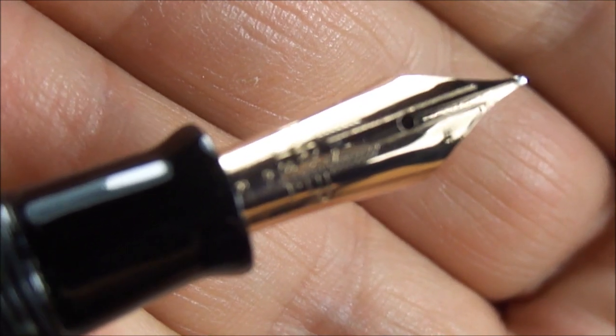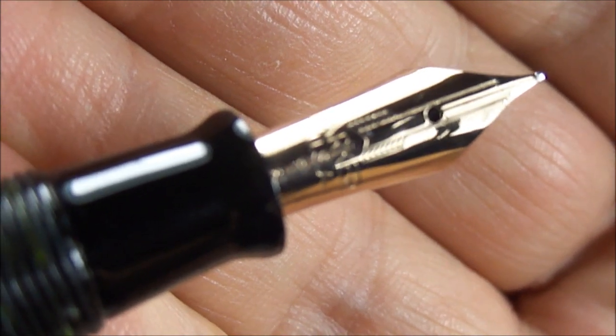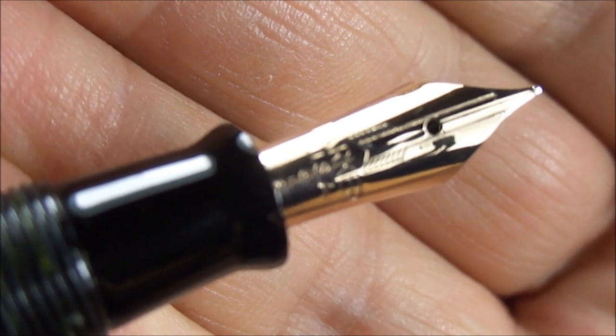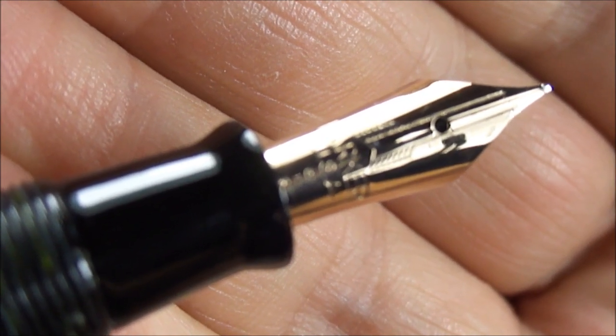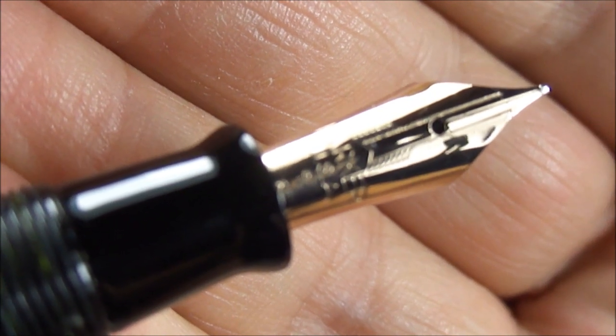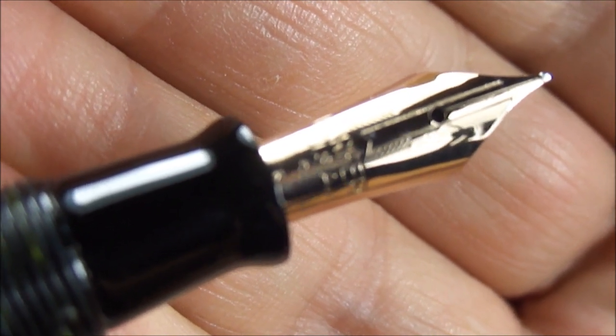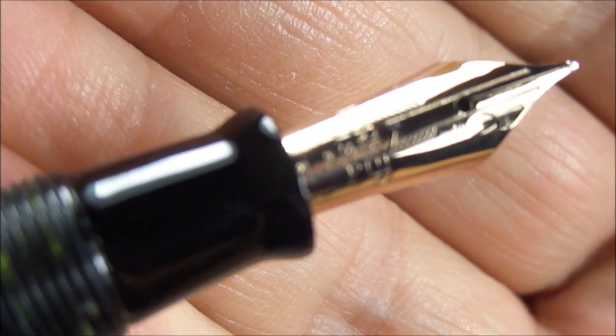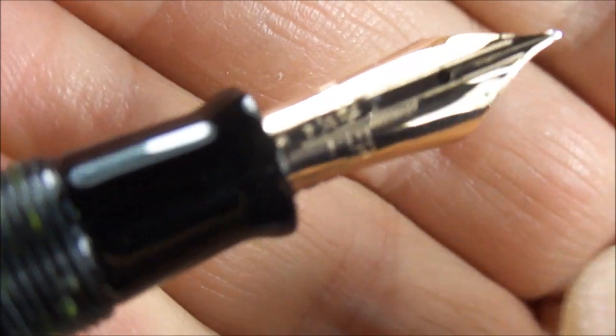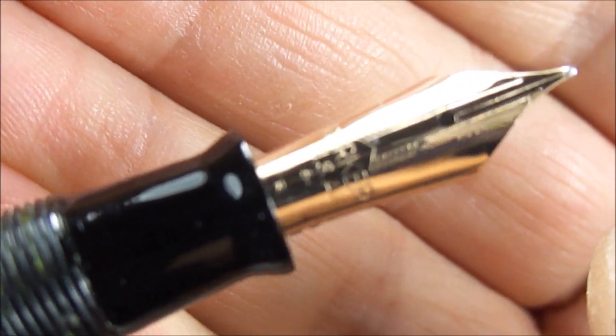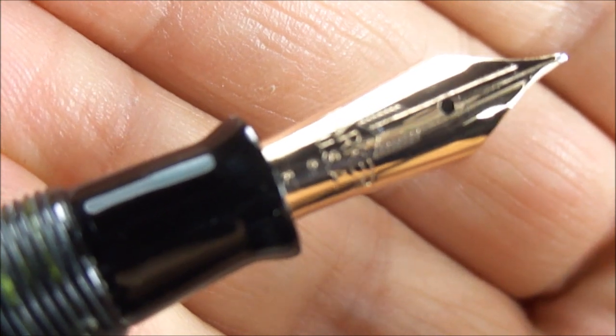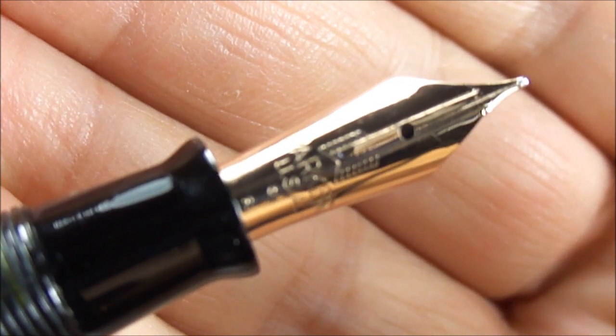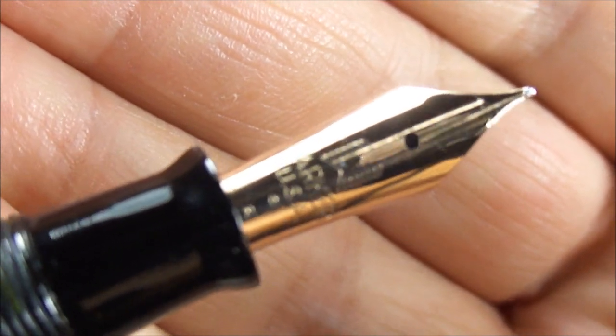You can see it's got the inlaid arrow to the center of the nib there and then to the bottom you'll see it's got the imprint there and the imprint on this one reads Parker USA number six which actually dates this particular nib I believe to 1946 and then just underneath the six to the bottom of the nib you'll see it's got a letter R. Now I believe the R actually stands for replacement nib.